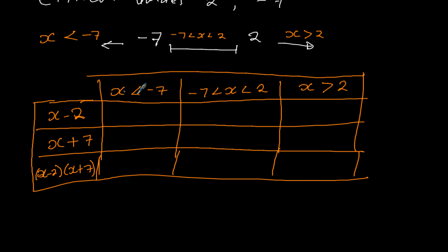So for values of x which are less than negative 7, we can use any value, for example negative 8. If I put here negative 8 minus 2, it will give me negative 10, but I'm interested in the sign, that is negative. Then if I put here negative 8, that will give me negative 8 plus 7, negative 1, so I just write negative. This is a product of these two. When I multiply negative times negative, I end up with positive.